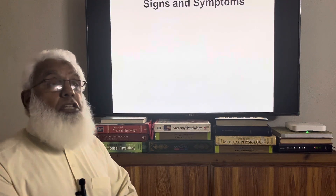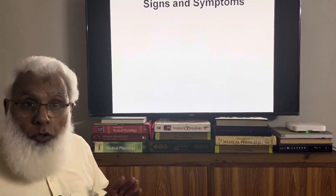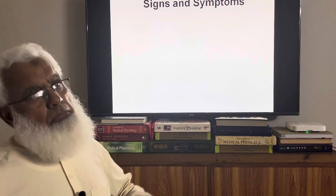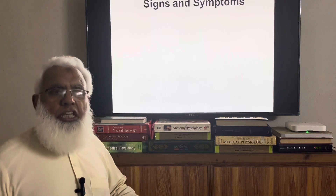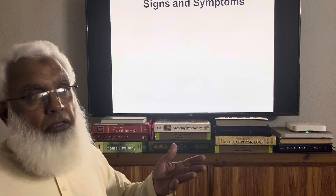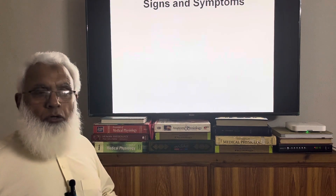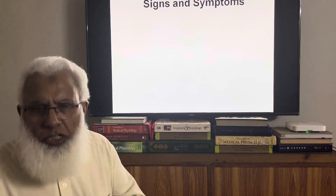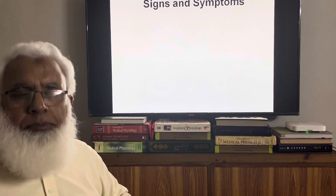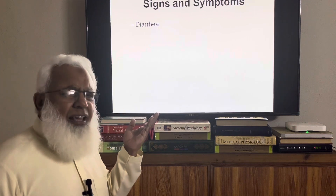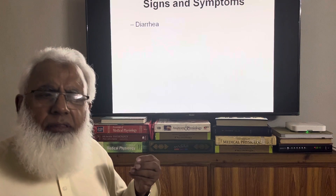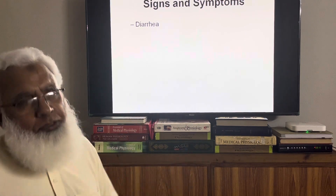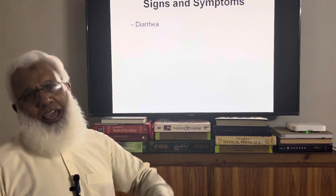Now the features, signs and symptoms of this disease: if we know the functions, all the cells and most systems are overactive — CVS is overactive, GIT is overactive, endocrine systems are overactive because of excessive metabolism throughout the body. One symptom is diarrhea, due to overactivity of the GIT. More appetite is also a feature — more digestion and absorption.